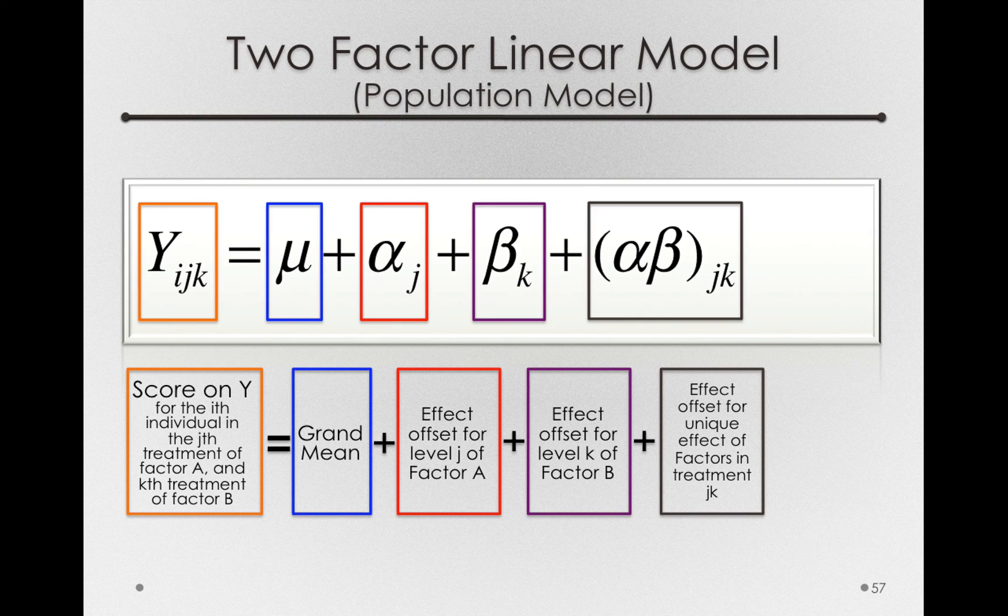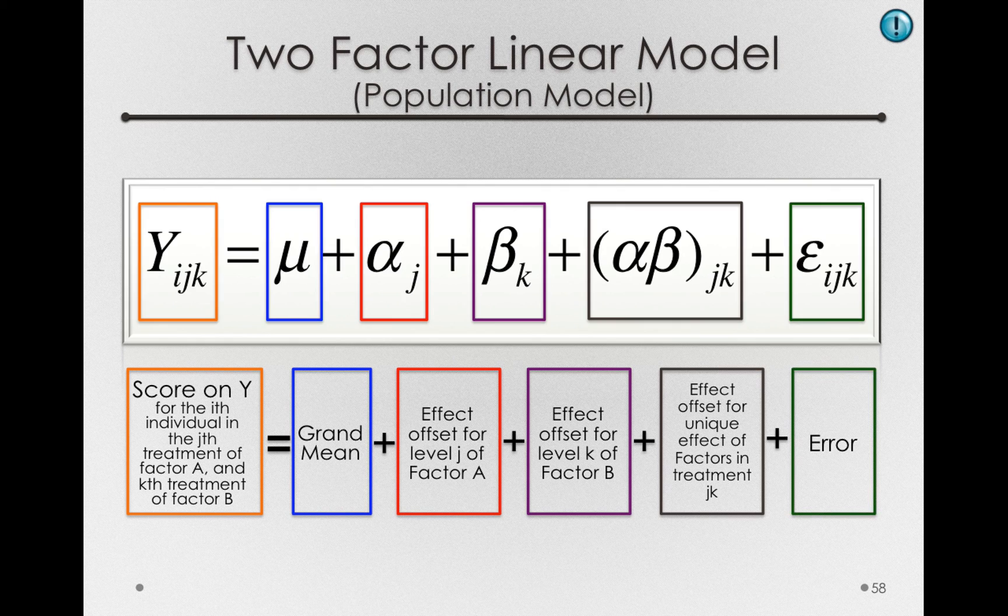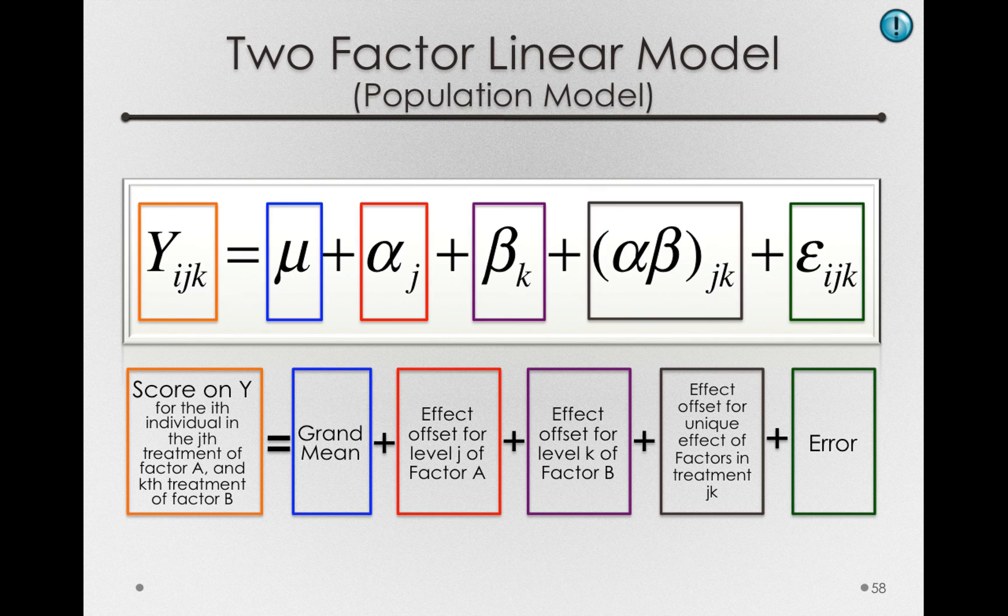And finally, because we're representing each individual's score, we'll have to add one final component, the individual error. In this case, notice that our epsilon has three subscripts, because of course it's the error for each individual in each of the groups.